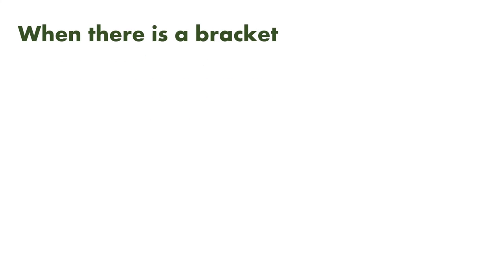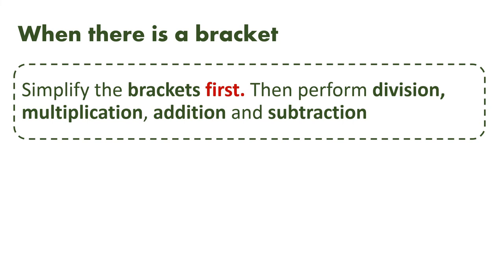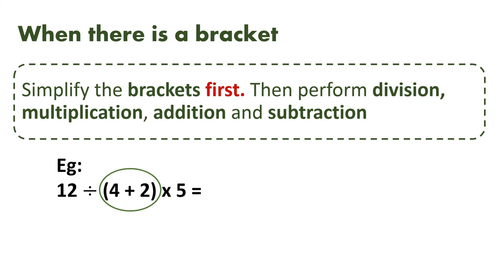When there is a bracket, how do we perform the mathematical operation? First of all, we have to simplify the brackets. Whatever is within brackets, we have to solve that first and then perform division, multiplication, addition and subtraction as before. For example, 12 divided by (4 plus 2) into 5. We simplify the bracket first: 4 plus 2 is 6. That gives us 12 divided by 6 into 5. Then from left to right, we have division and multiplication: 12 divided by 6 is 2, and 2 into 5 is 10. So our final answer is 10.